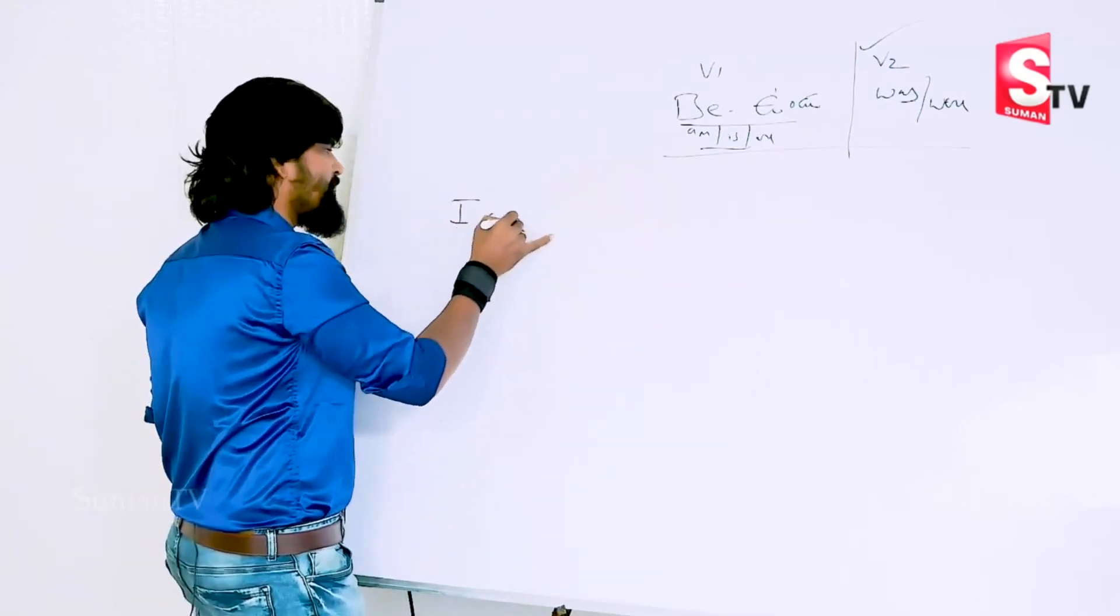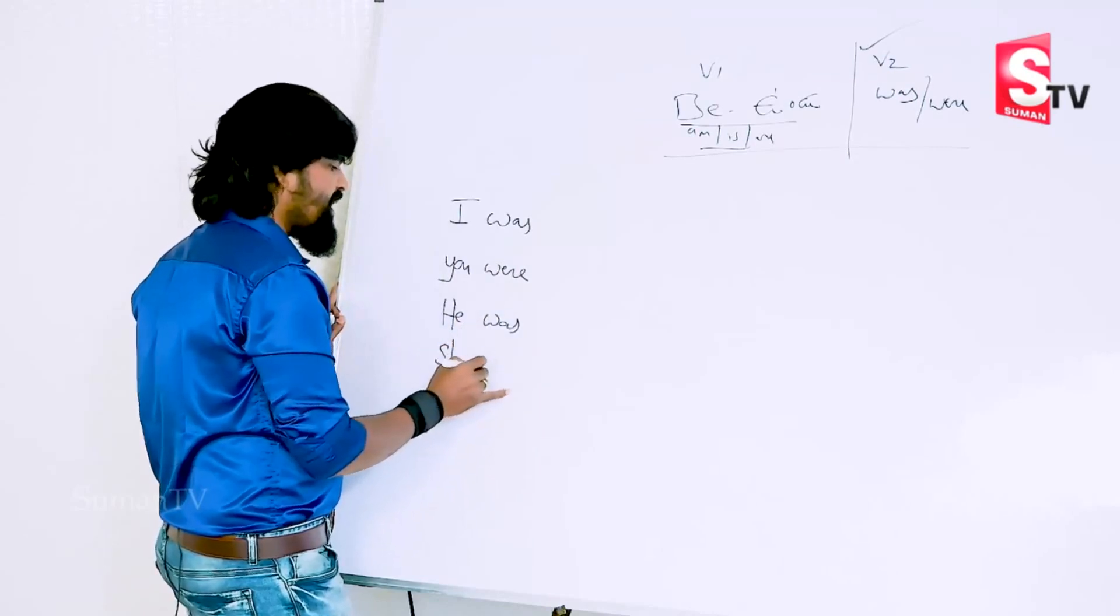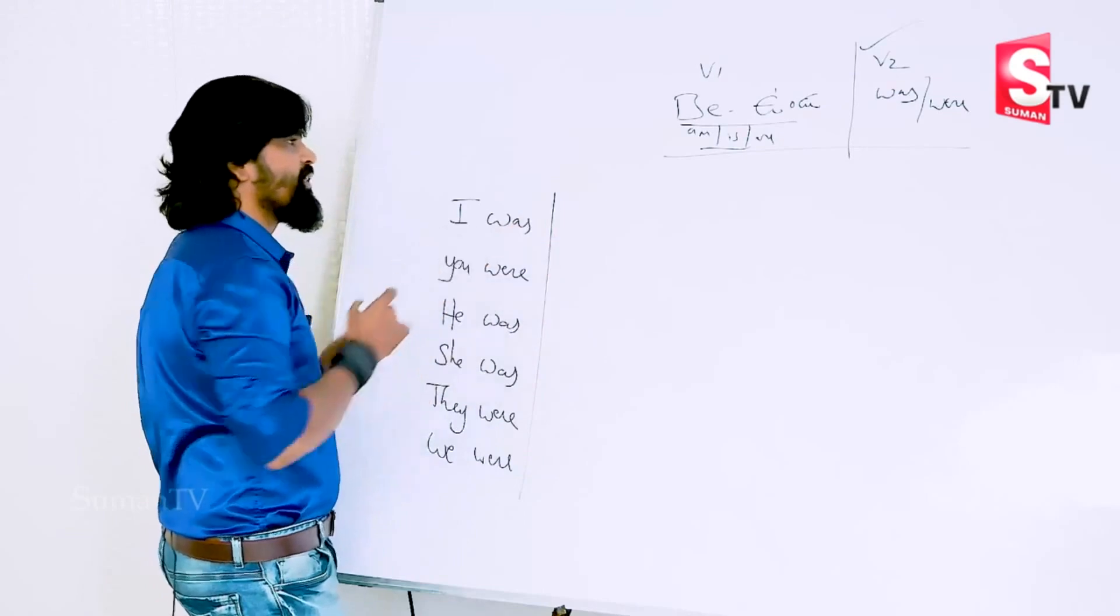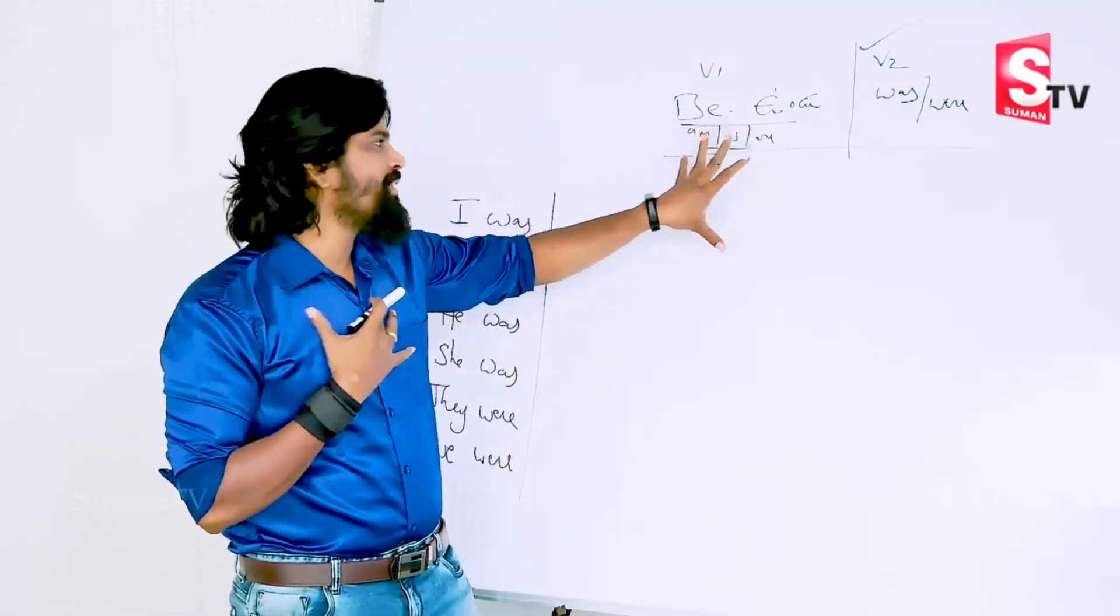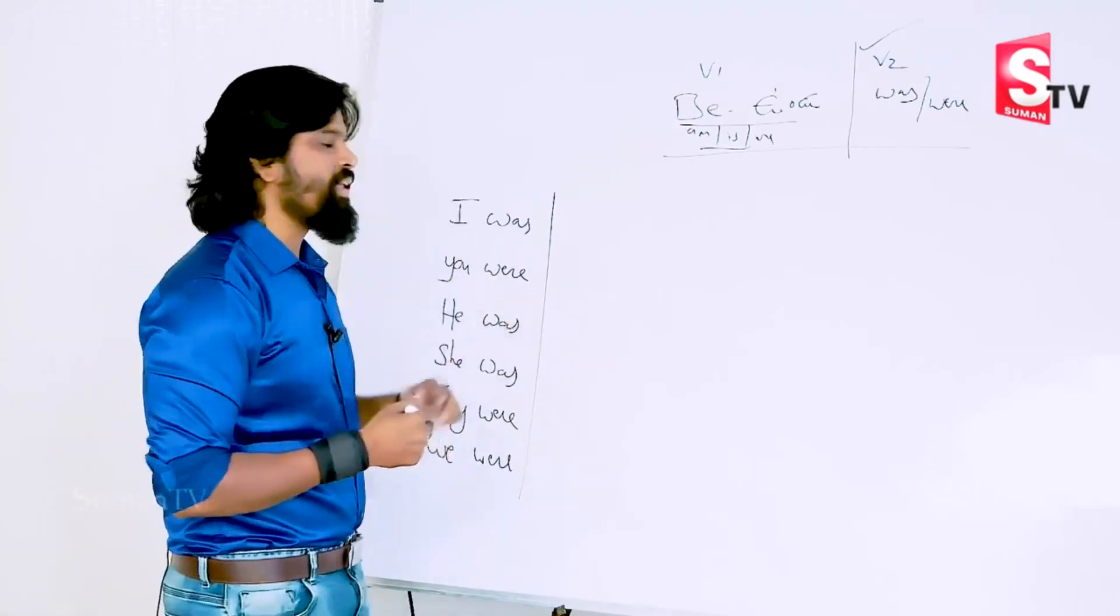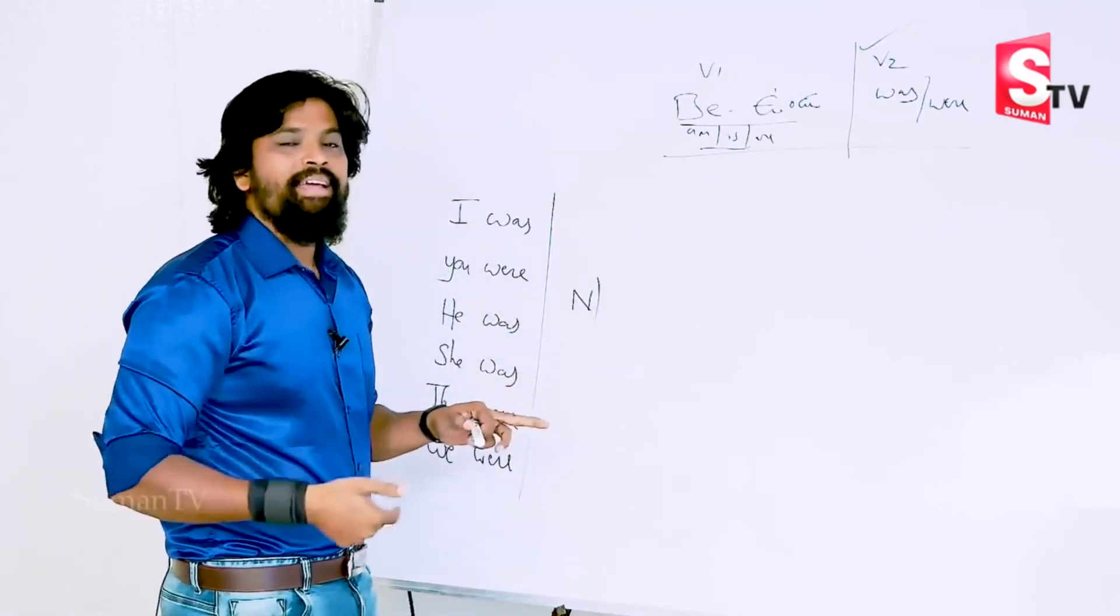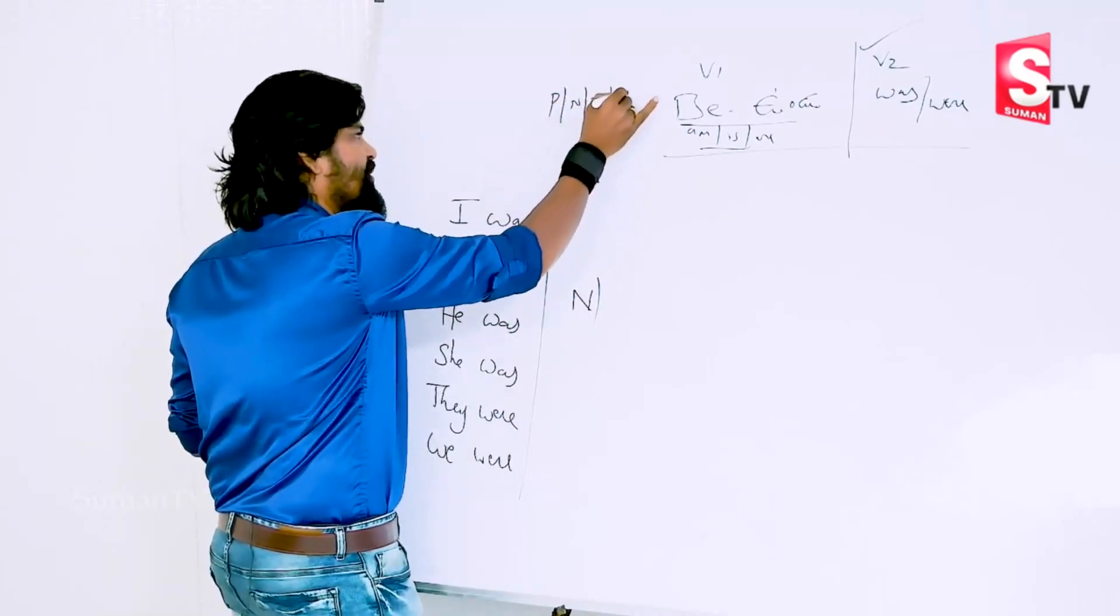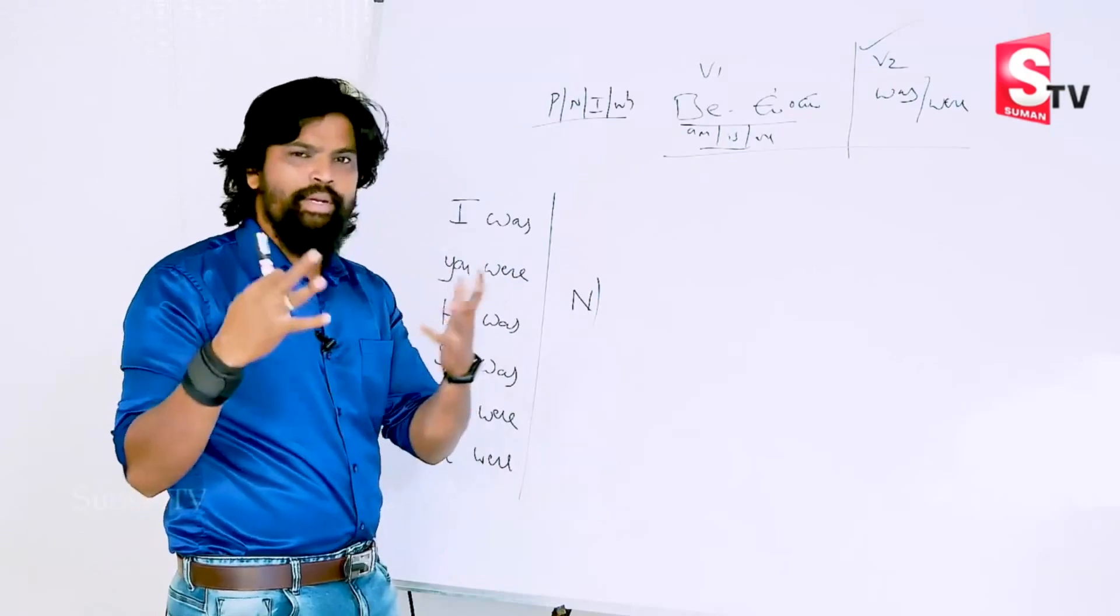I was, you were, he was, she was, they were, we were. Very good. I am present - I am a trainer now, I am speaking, I am in Rajahmundry. Present: I am. Past: I was. I was a student in the past. Now I am a trainer.